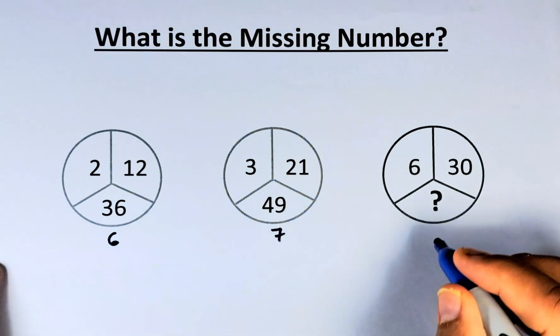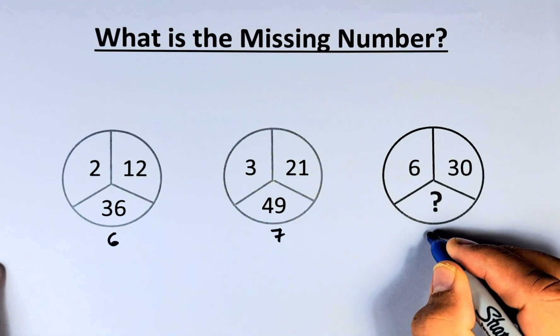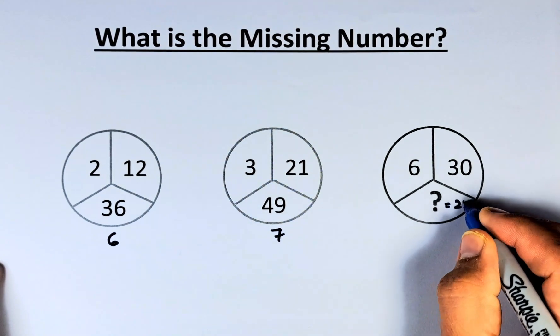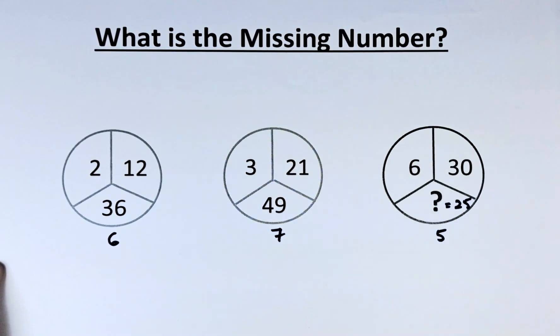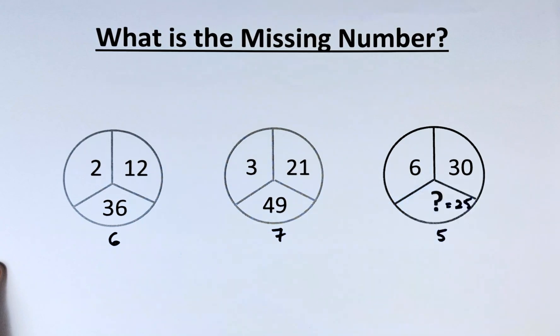So what will be the question mark? The question mark is going to equal 25. Because the square root of 25 is 5, and then 5 multiplied by 6 will give you 30.